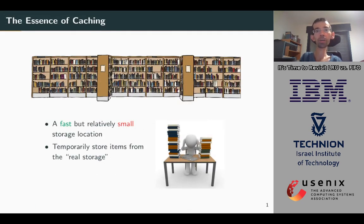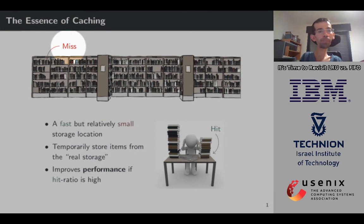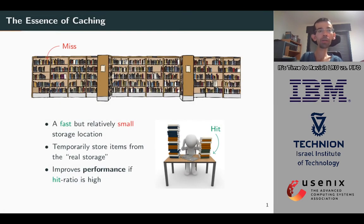This talk is about caching. The basic concept of caching is where you have a big but slow storage and a smaller, faster one that can save only a portion of the items. When we have an access and we could serve it from the cache, then we call it a hit. But if we can't serve it from there and we need to go to the real storage and take the item from there, then we call it a miss. If the hit ratio is high, meaning the portion of the accesses we serve from the cache is big, then it means we improve the performance of our system.